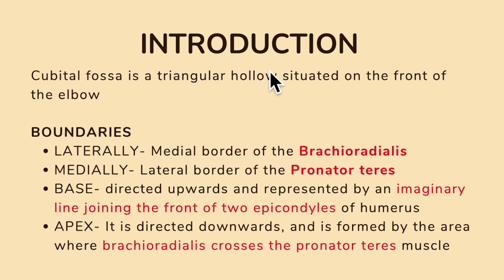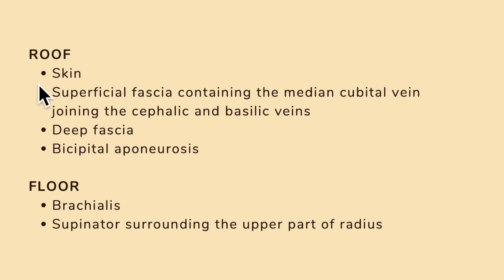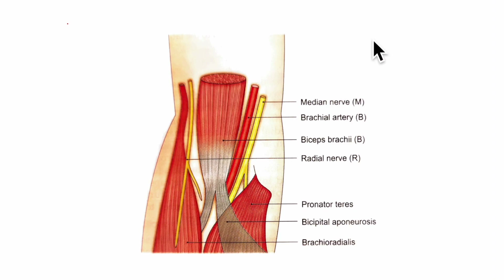To summarize: the cubital fossa is a triangular hollow situated on the front of the elbow. Laterally it is bounded by the medial border of the brachioradialis muscle; medially by the lateral border of the pronator teres muscle. The base is directed upwards along an imaginary line joining the front of the two epicondyles of the humerus. The apex is directed downwards where brachioradialis crosses pronator teres. The roof is formed by skin, superficial fascia containing the median cubital vein, deep fascia, and bicipital aponeurosis. The floor is formed by the brachialis and supinator muscles.